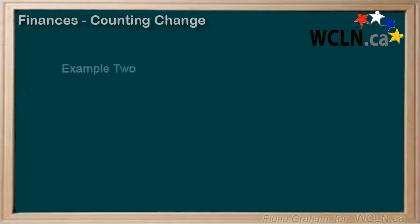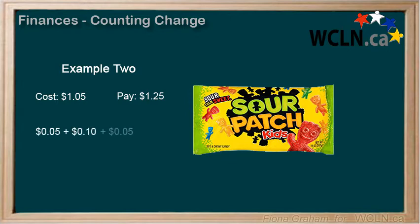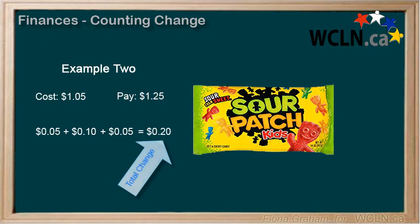Here's another example. Let's say you buy a bag of sour patch kids for a dollar five and you give the cashier a dollar twenty-five. No rounding will happen because we do still use nickels. So we start by adding 5 cents to get to the next 10, then add another 10 cents to get to 20 cents, and then 5 cents more to get to $1.25. So 5 cents plus 10 cents plus 5 cents equals 20 cents total change. You might also be able to do this using mental math — if you know the difference between 5 and 25 cents would be 20 cents change.